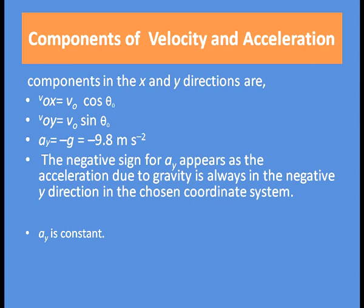The negative sign before g indicates that the acceleration due to gravity is always in the negative y direction, because the positive y direction is upward while g always acts downward. Ay is constant, meaning the acceleration due to gravity is constant.